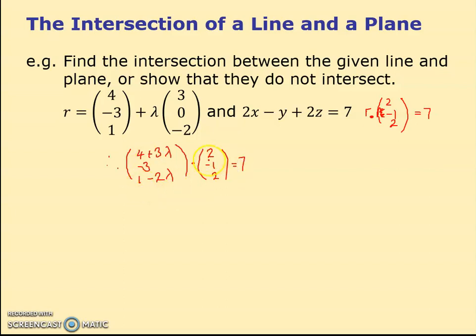So let's do the dotting. So it's 2 lots of 4 plus 3λ. So that's 8 plus 6λ. Minus 1 times minus 3 is plus 3. And 2 lots of that is plus 2 minus 4λ. And that equals 7. And you can see quite easily, we work out what λ is. 6λ minus 4, now I've got 2λ. And I've got 8, 11, 13 equals 7. So 2λ is minus 6. And presumably λ is minus 3.